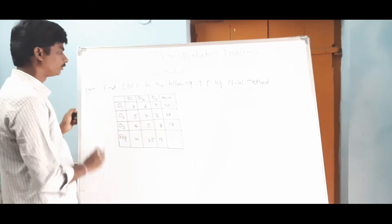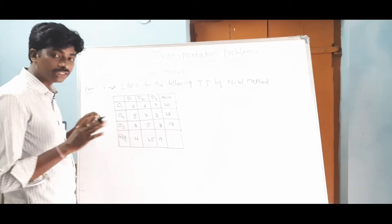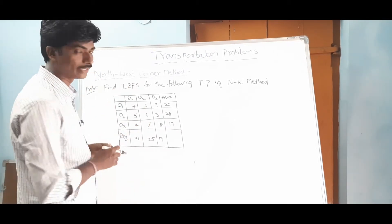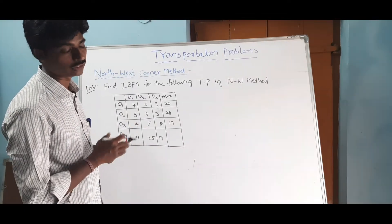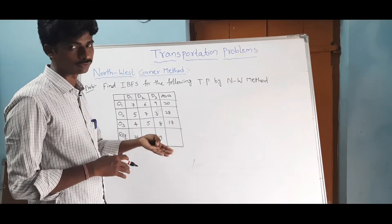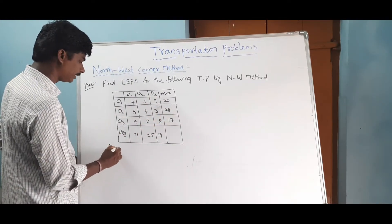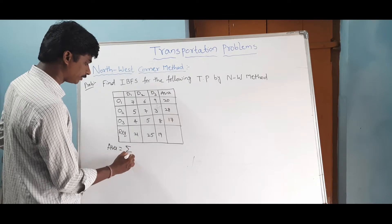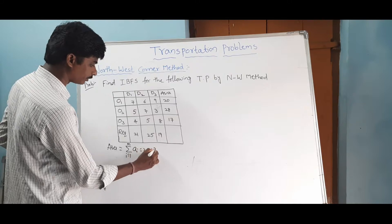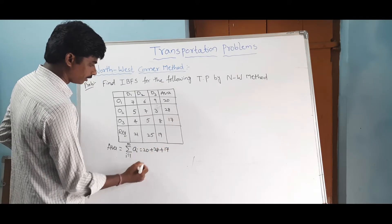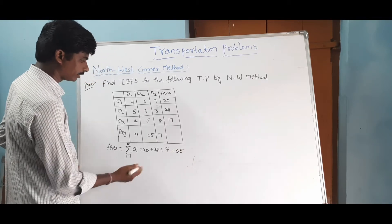Here we have a problem with three destinations and three origins. First, we need to check whether this is a balanced or unbalanced transportation problem. Availability equals summation i=1 to m of ai, which is 20 plus 28 plus 17, giving us 65.